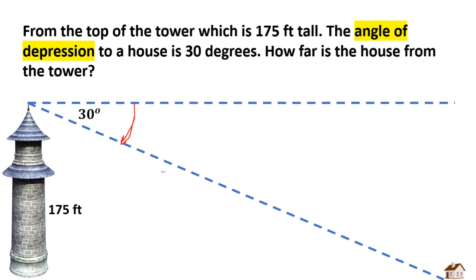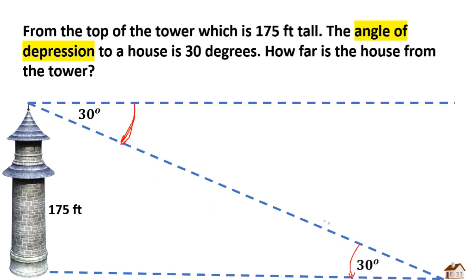By using the properties of angles in parallel lines — these are parallel lines — these angles are equal. So we can use 30 degrees here. This is 175 feet and I can use this as my reference angle. This is the opposite side and this is the adjacent side.